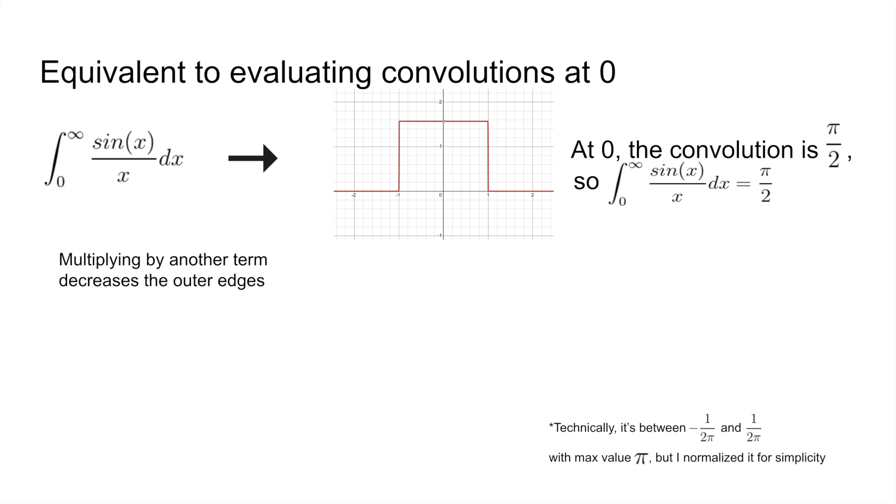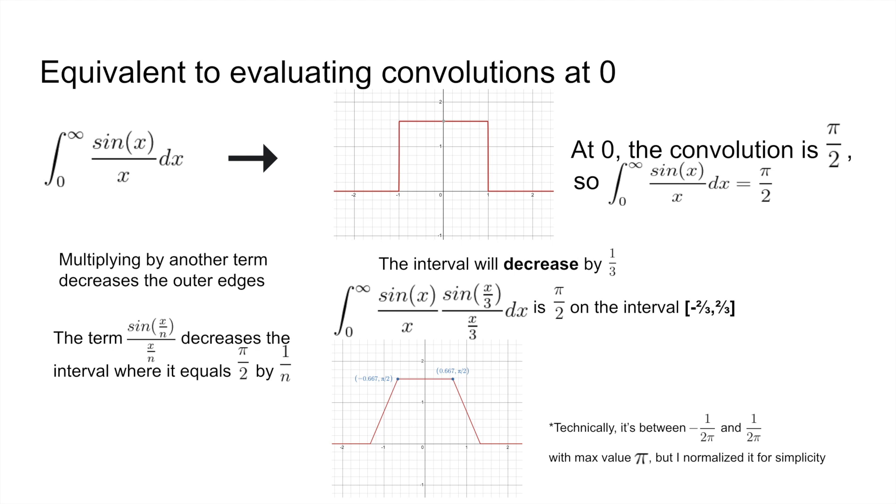In general, if we are multiplying by sin(x/n)/(x/n) for some n, then the size of the interval where our convolution is equal to π/2 will actually decrease by 1/n on both sides. So for our next integral, where we are multiplying by sin(x/3)/(x/3), our interval will decrease by 1/3 on each side, and so our new interval is equal to negative 2/3 to 2/3.